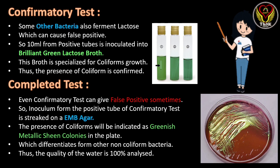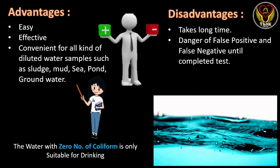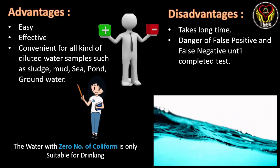To confirm further, we move on to the completed test. In this test we use EMB agar, or Eosin Methylene Blue agar — a differential media on which coliform bacteria, especially E. coli, can grow with a characteristic greenish metallic sheen, as shown in the picture. We plate the positive tubes from the confirmatory test, and after incubation, if we observe greenish metallic sheen colonies, we can 100% confirm that the water has coliform bacteria and is not suitable for drinking.